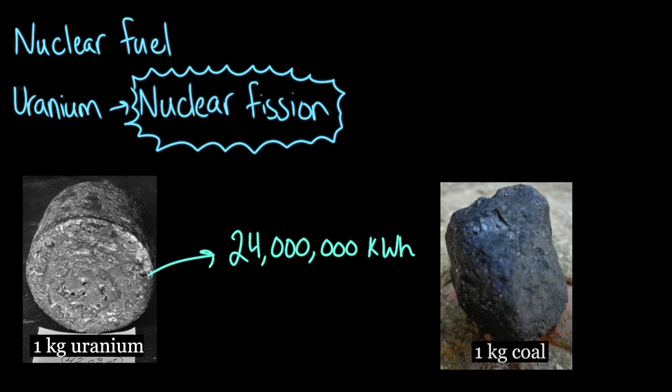Just one kilogram of uranium can produce 24 million kilowatt-hours of energy. Compare that with one kilogram of coal, which can produce 8 kilowatt-hours of energy. In other words, nuclear fission produces a lot of energy.